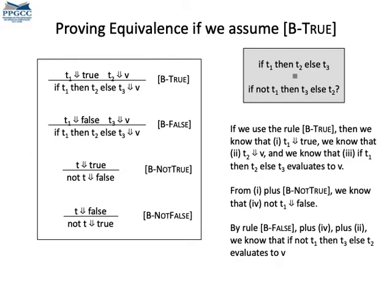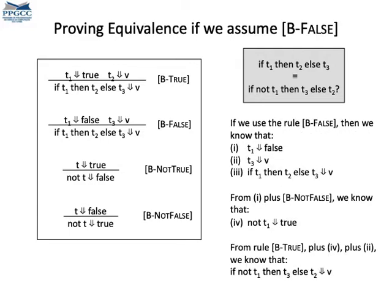By rule B-False, right here, plus premises 4 and 2, because I need two premises for this rule, we know that if not t1 then t3 else t2 evaluates to v. If we assume that B-False was used to derive the if-then-else instead, then reasoning is similar. You can stop the video and read the proof over. Just check that proving equivalence, in this case, is just a matter of plugging facts in the right rules. The proof is very mechanical.